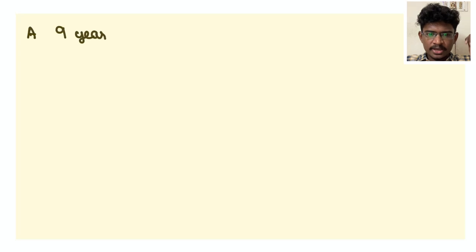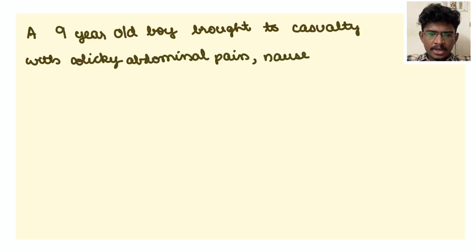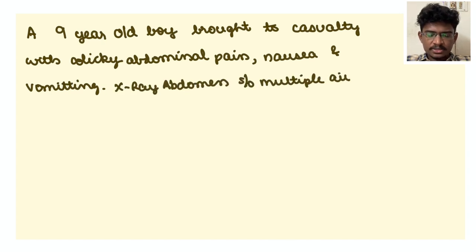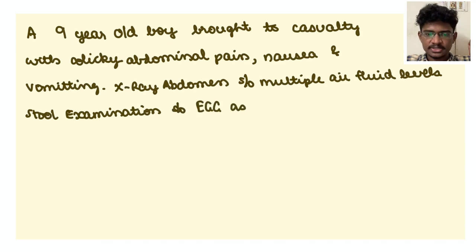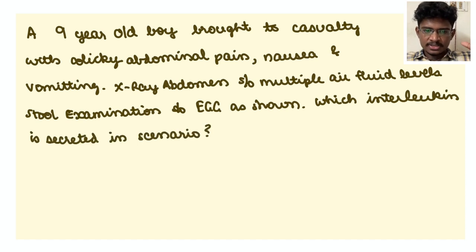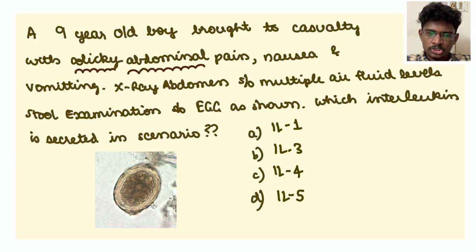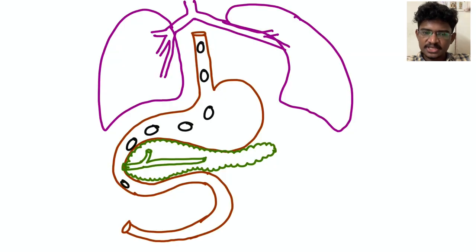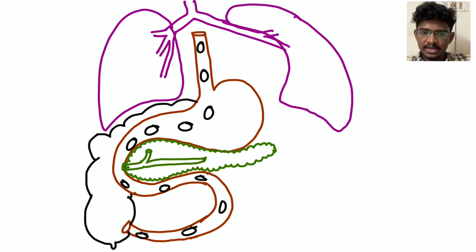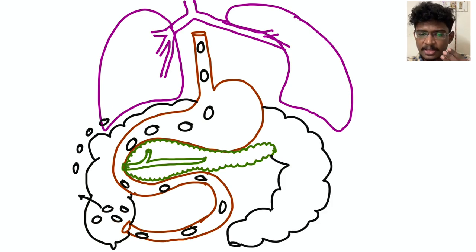A 9-year-old boy complains of colicky abdominal pain and recurrent nausea, vomiting, and X-ray suggestive of multiple air-fluid levels. And the stool routine was done. The egg was shown in the picture. What interleukin is secreted in this child? Interleukin 1, 3, 4, or 5. So this history, it's some worm infection is happening and the egg given was an Ascaris egg. There's nothing but ascariasis.